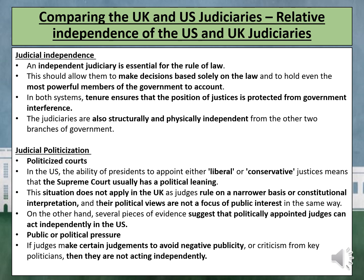This is proven in the US with Bush v. Gore in 2000. However, several pieces of evidence suggest that politically appointed judges can act independently. The president has no influence over justices once they have been appointed, as they have tenure. Justices may rule against the political interests of the politicians who appointed them, as associate judges Neil Gorsuch and Brett Kavanaugh did against Donald Trump in Trump v. Vance in 2020. A second way judicial politicisation can threaten independence is through political or public pressure: if judges make certain judgements to avoid negative publicity, they are not acting independently.